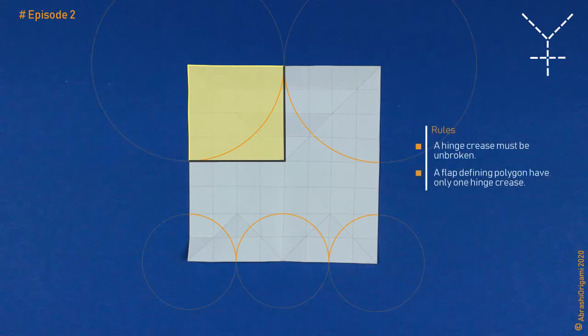Now, please pay close attention, this is something I'd like you to remember. Firstly, a hinge crease must be unbroken. And secondly, a flap defining polygon have only one hinge crease. I hope you understand that.